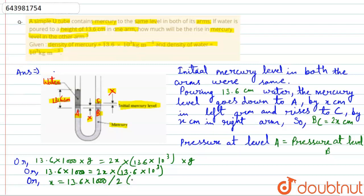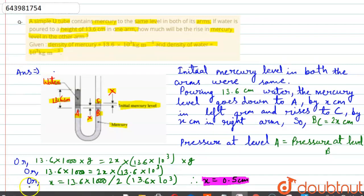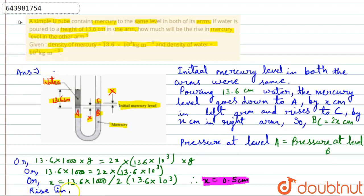Therefore, x = 0.5 centimeter. This is the answer: rise in mercury level in the right arm is 0.5 centimeter.